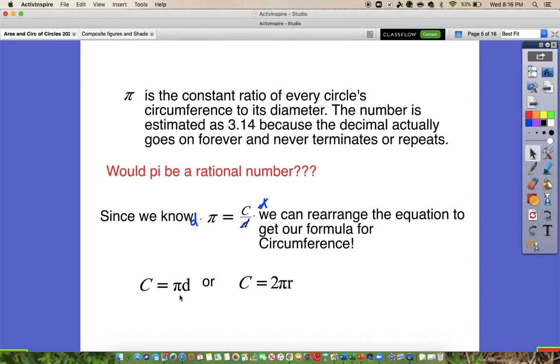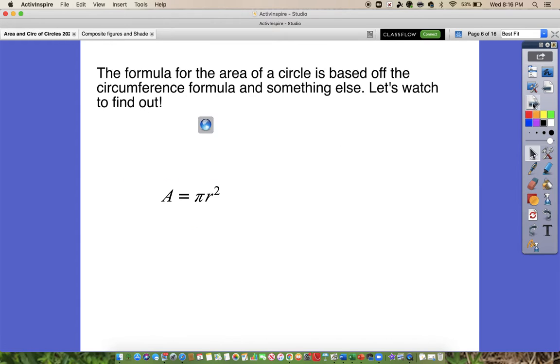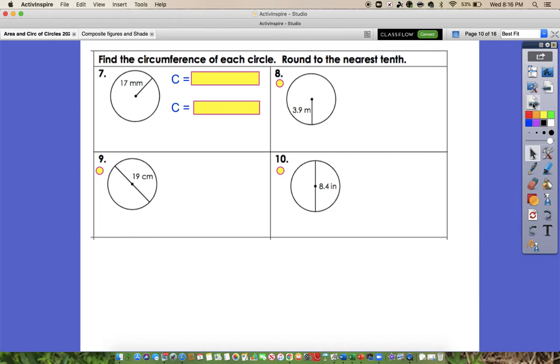And they've told us that radius is 17 millimeters. So going back to our two formulas for circumference, we can either use pi times diameter, or 2 pi times the radius. Since we've been given the radius, we want to use this formula that has our R in it. So we want to do 2 times 3.14, because that's pi, times the radius, which was 17. And when we multiply all of that together, we should get 106.8 millimeters. So that would be our circumference of the circle. So all we're doing is just substituting that measurement into our formula.